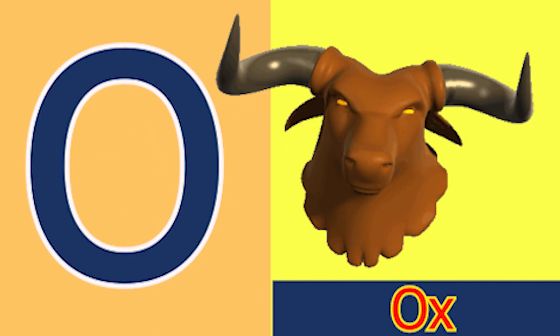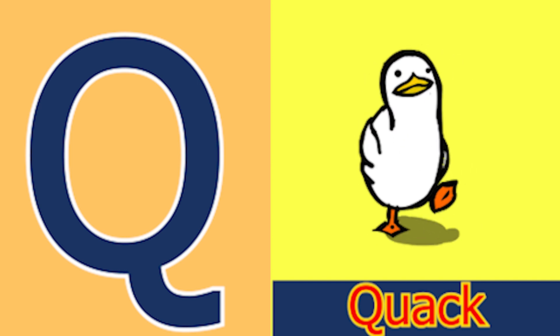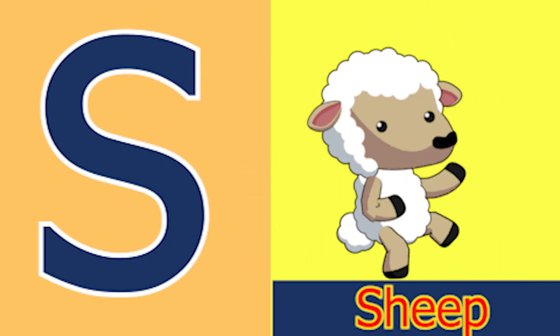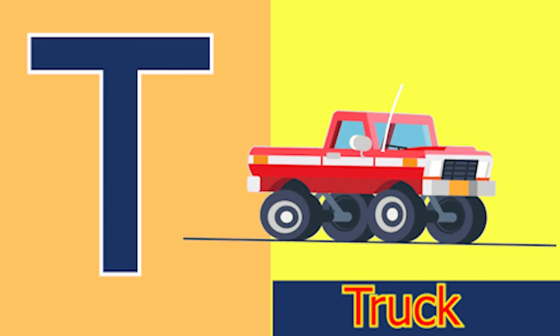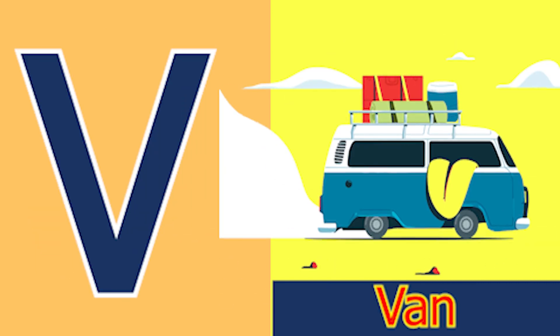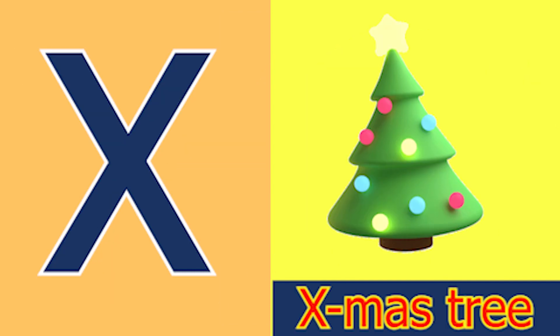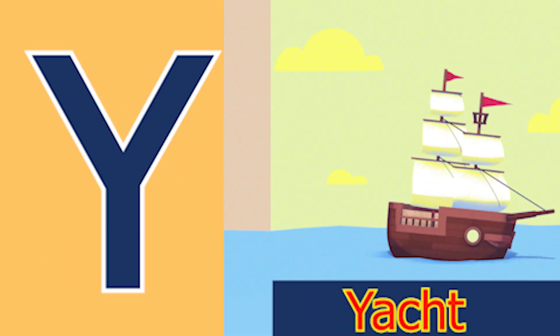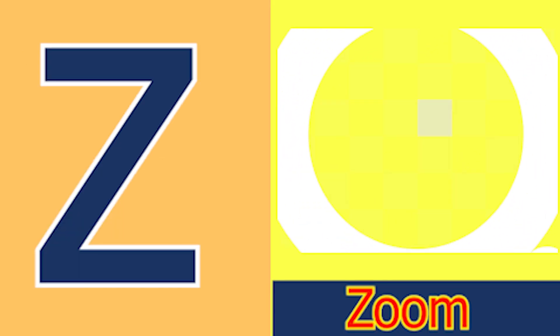O for ox and P for pan, Q for quack and R for rain, S for sheep and T for tub, U for utensil, V for van, W for wheel and X for accessory, Y for yacht and Z for zone.